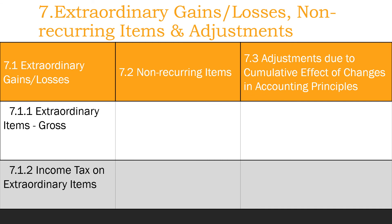7. Extraordinary gains and losses. 7.3.1 Extraordinary gains/losses. 7.1.1 Extraordinary items, gross. 7.1.2 / 7.3.2 Income tax on extraordinary items. 7.3.2 Non-recurring items. 7.3.3 Adjustments due to cumulative effect of changes in accounting principles.